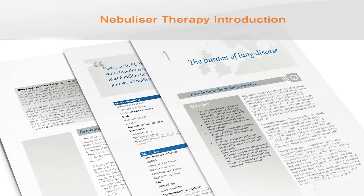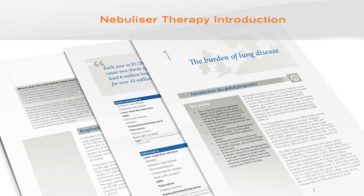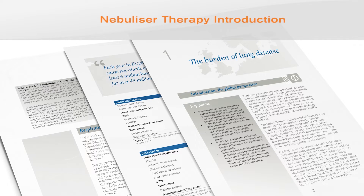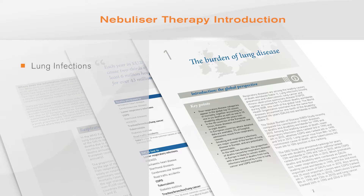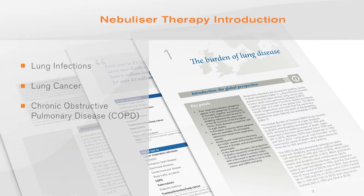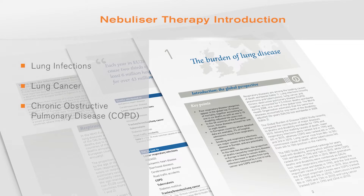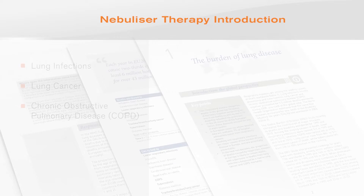The European Respiratory Society publication, the European Lung White Book, states that respiratory diseases are among the leading causes of death worldwide. Lung infections, mostly pneumonia and tuberculosis, lung cancer and chronic obstructive pulmonary disease together accounted for 9.5 million deaths worldwide during 2008 — one-sixth of the global total.